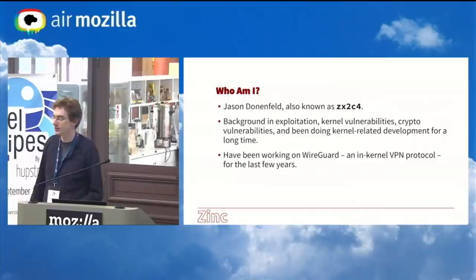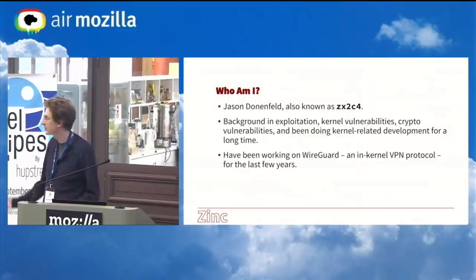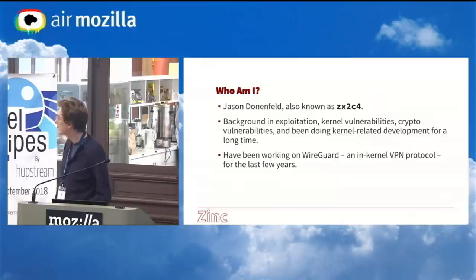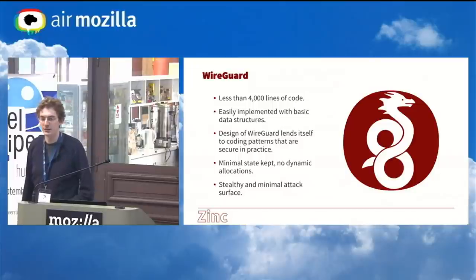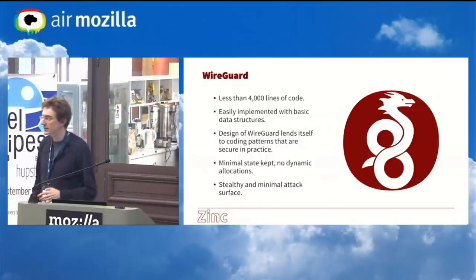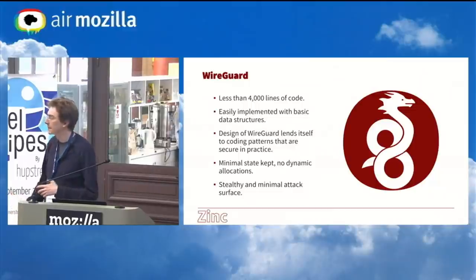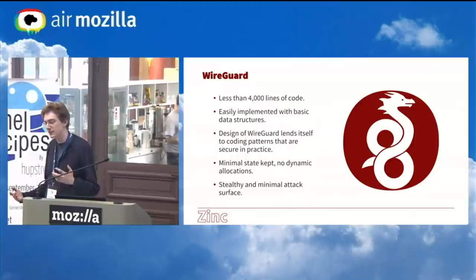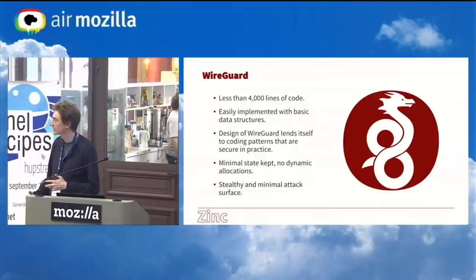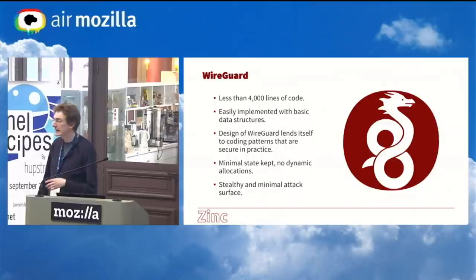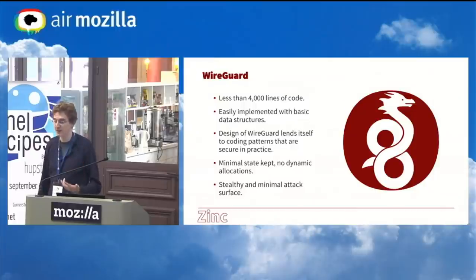Some background. I'm Jason. Usually I break stuff. The last couple of years I've been making WireGuard, a bit of a change. WireGuard has some strange design goals for the kernel, trying to be really short, trying to be implementable with basic data structures. The design is meant so that you can implement it with really simple code constructs, and the best coding practices come naturally from the requirements of the protocol. There's minimal state kept, no dynamic memory allocation in the fast path, and we want a stealthy and minimal attack surface.